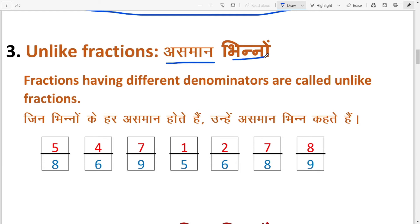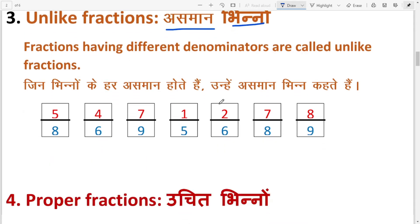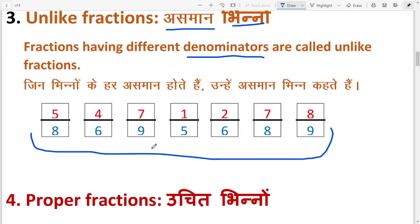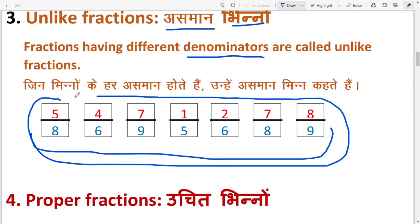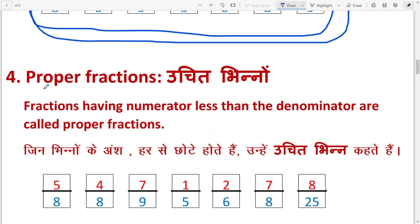Next: Unlike fractions, meaning 'asamaan bhin'. Fractions having different denominators are called unlike fractions — जिन भिन्नों के हर असमान होते हैं उन्हें असमान भिन्न कहते हैं. For example: 5/8, 4/6, 7/9, 1/5, 2/6 — all denominators are different, so these are unlike fractions.